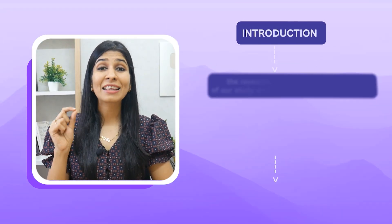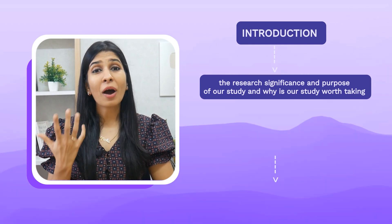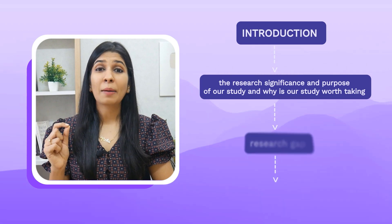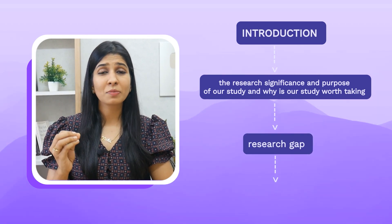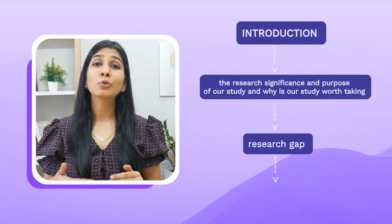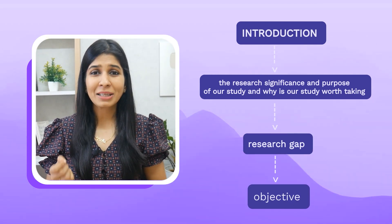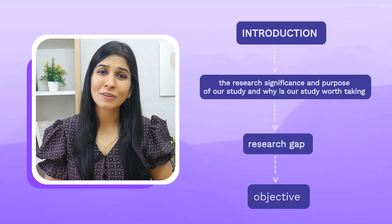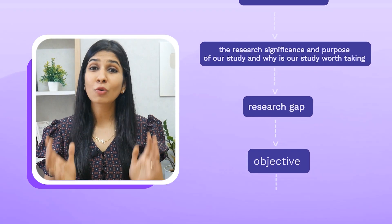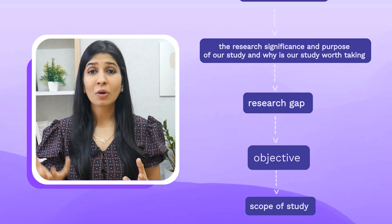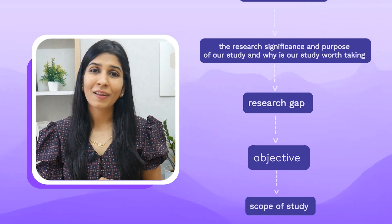The next chapter is the introduction, where you first share the significance and purpose of your study — why your research is worth taking up. After that you establish the research gap: what problems other researchers have not been able to solve. Once the research gap is established, you share the objective of your work — what exactly you are trying to achieve that will help fulfill that gap. And finally, you cover the scope of your study: what you are and are not planning to discuss in your research thesis.